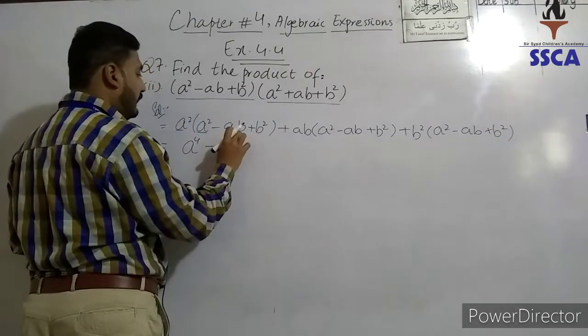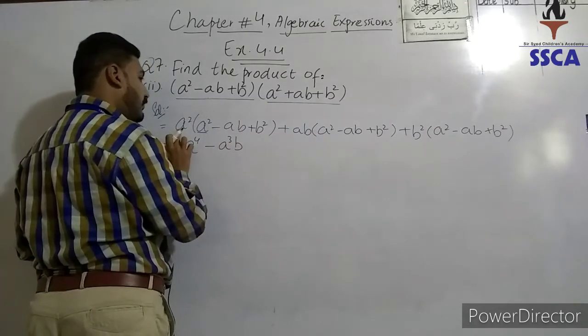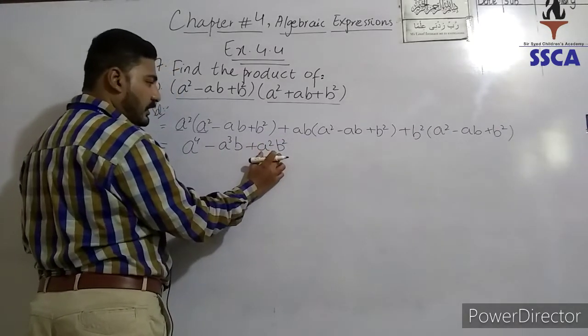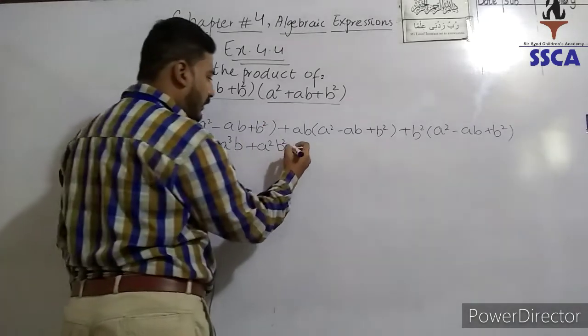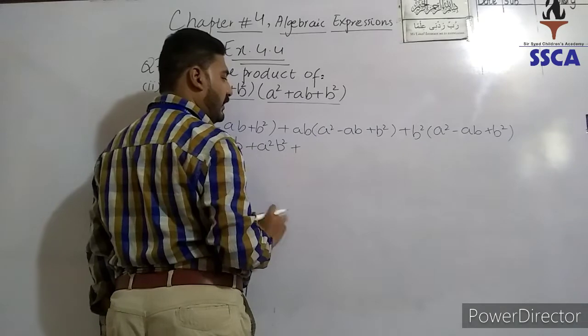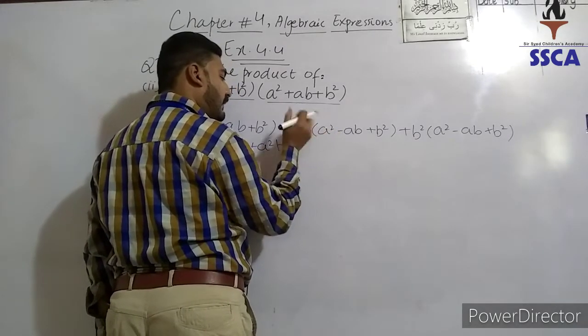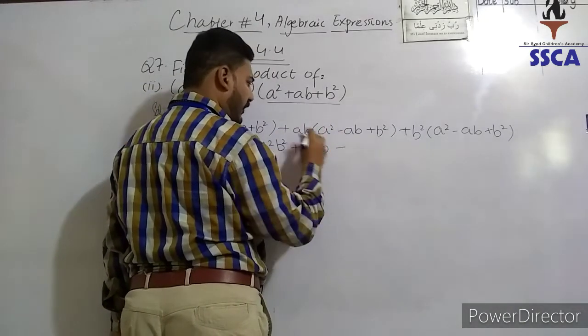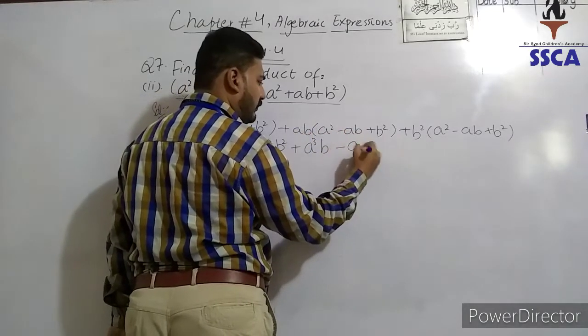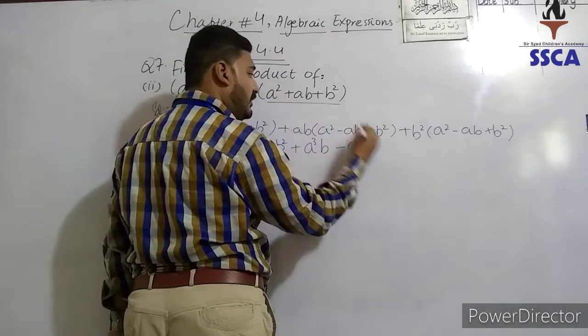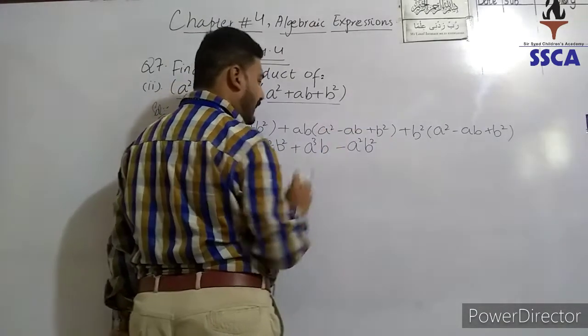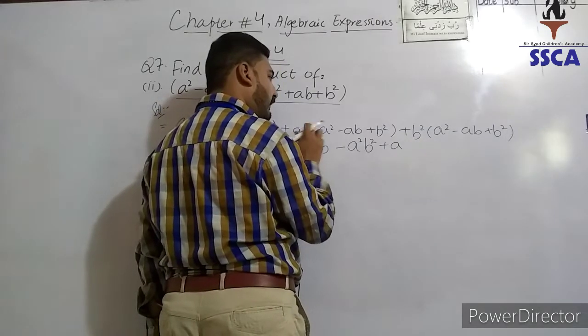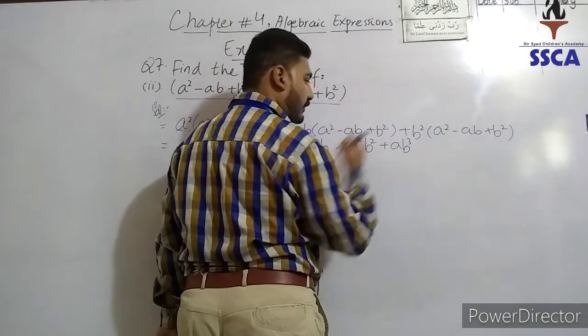Following the laws of exponents, a squared multiply with a squared gives a to the power 4. A squared multiply with ab gives a cubed b. A squared with b squared gives a squared b squared. Then ab multiply with a squared gives a cubed b. Plus minus gives minus a squared b squared. Then ab with b squared becomes ab cubed.